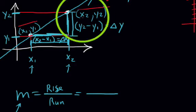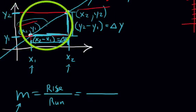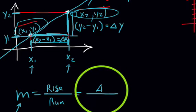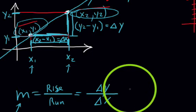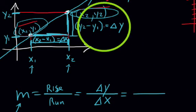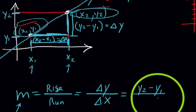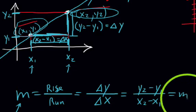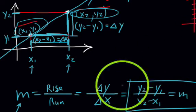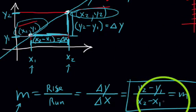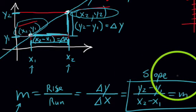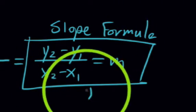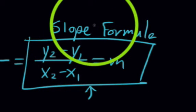So knowing that rise is delta y and run is delta x, we define: m equals delta y over delta x, which equals y2 minus y1 over x2 minus x1. This is the slope formula — the slope of a line through two points. Write this down and keep it; we'll be using it often to determine the slope of a line through two points.